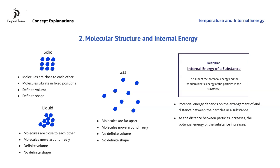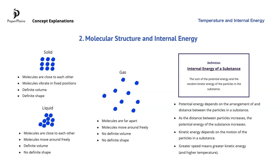As the distance between the particles increases, the potential energy of the substance also increases. Kinetic energy depends on the motion of the particles in the substance. The greater speed particles have, the larger their kinetic energy will be. As we mentioned when we defined temperature, greater kinetic energy also means higher temperature.